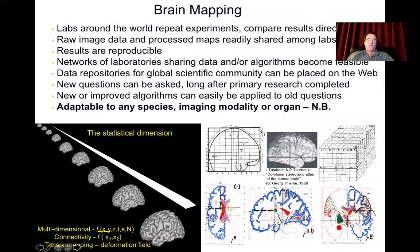What really motivated the arrival of this whole new field of cognitive neuroimaging was the introduction of stereotactic space — a rather trivial concept of mapping everybody's three-dimensional brain image into a common coordinate space, into a three-dimensional box. But it has had profound implications. Labs around the world can repeat experiments and compare results directly. Raw image data and processed maps are readily shared. Results are reproducible. Networks of labs can share data and algorithms. Data repositories for global scientific communities can be placed on the web. New questions can be asked long after the primary research is completed, and new or improved algorithms can easily be applied to old questions.